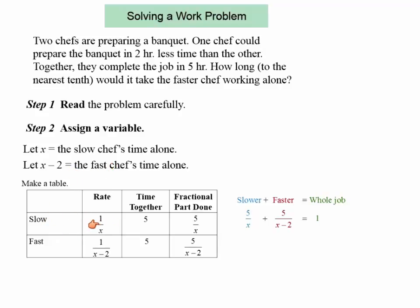So we're going to make a chart here, make a little table. We write the rate and time together, it's five, it's given to us. And we also find a fractional part done. So the fraction of time that each of them would complete the job.